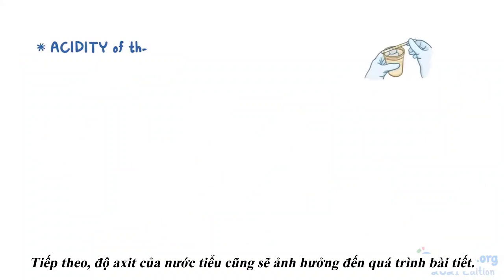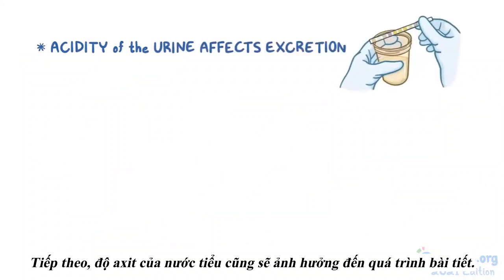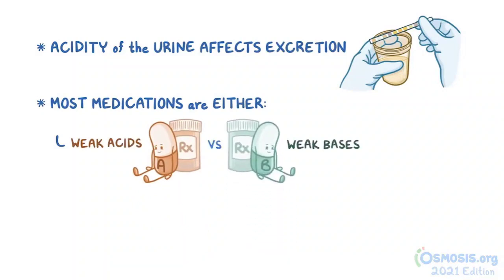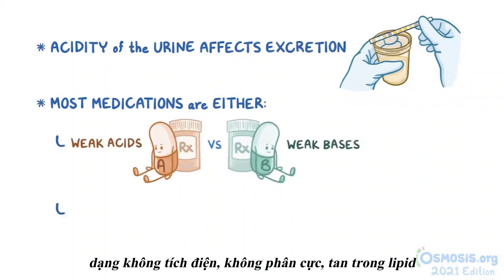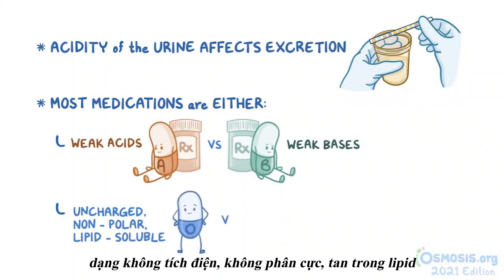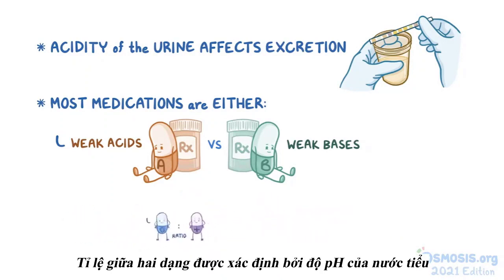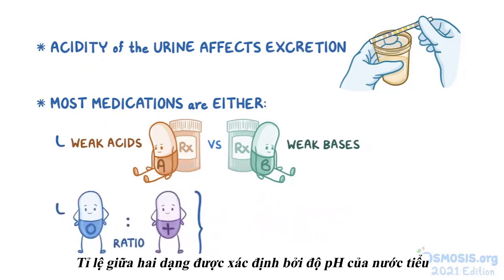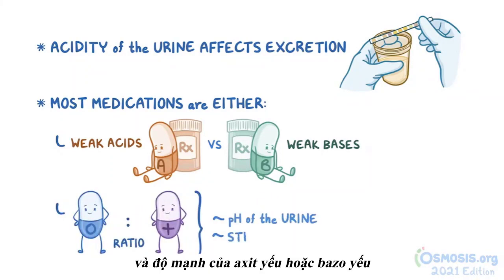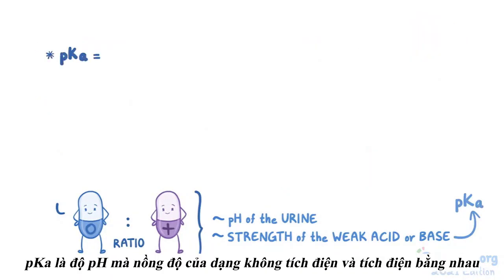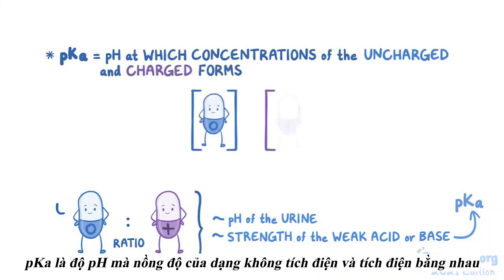The acidity of the urine will also affect excretion. Most medications are either weak acids or weak bases, and they can exist in both an uncharged, nonpolar, lipid-soluble form, as well as a charged, polar, water-soluble form. The ratio between the two forms is determined by the pH of the urine and by the strength of the weak acid or base, which is mainly shown by the ionization constant pKa — the pH at which concentrations of the uncharged and charged forms are equal.